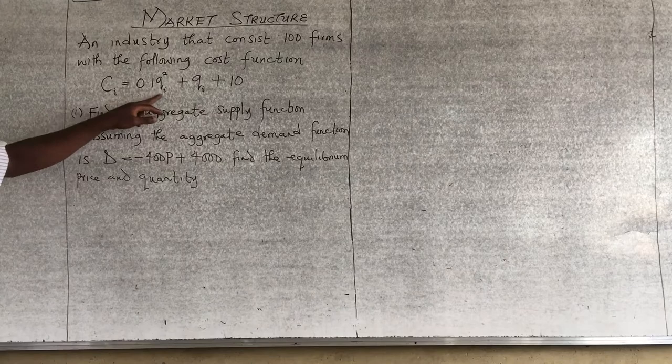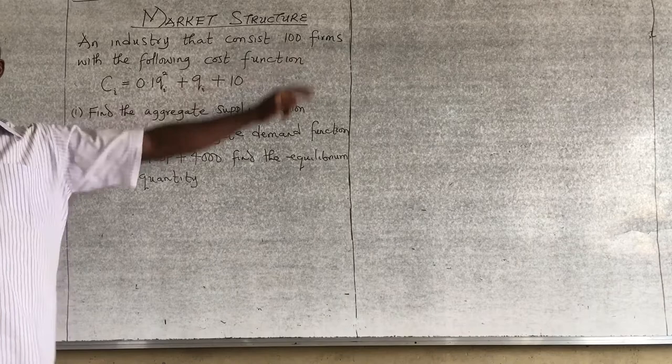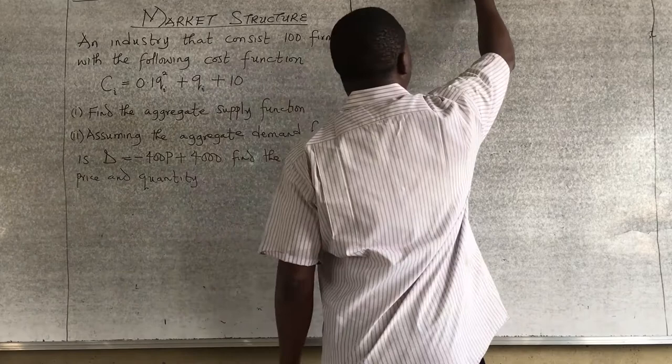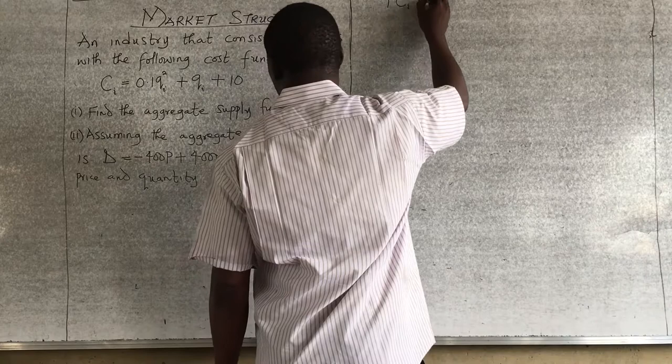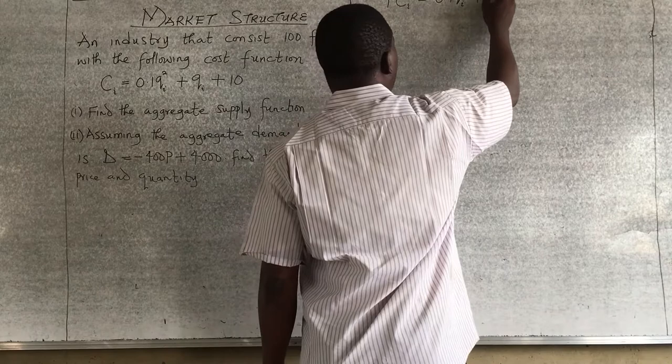Now, this is very straightforward. This is your cost function. In this one, they gave us the number of firms in the industry — how many? 100. So, our total cost is 0.1Q_i squared plus Q_i plus 10.